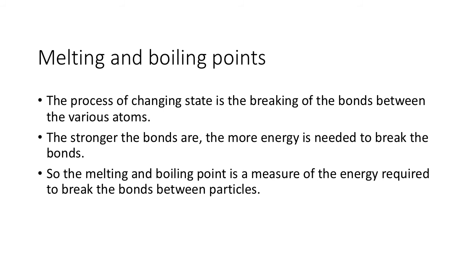Finally, there's the melting and boiling point. The process of changing states involves breaking the bonds that hold the atoms together — the same bonds that hold the atoms together and, hopefully, hold them in all directions to give malleability. If you want to break those bonds, you need to give it energy, and that's effectively melting or boiling the substance. The stronger the bond, the more energy is required to break it — i.e., you need a high melting or boiling point. A low melting or boiling point means not much energy is needed. So the melting and boiling point is effectively a measure of the energy required to break the bonds between particles, and therefore it tells you something about the bond strength.